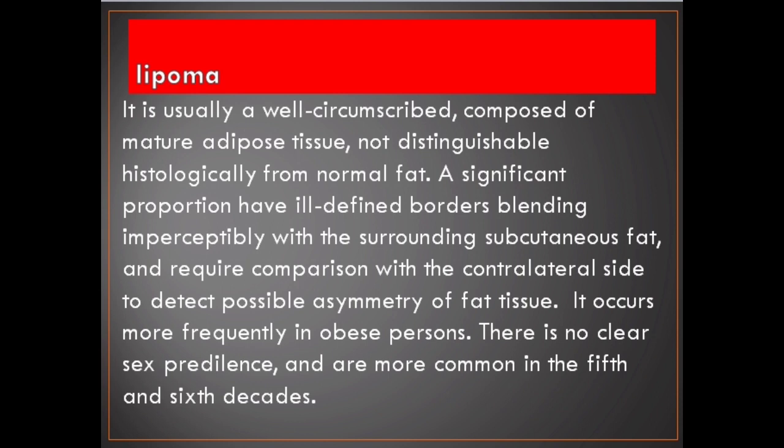It is usually well-circumscribed, composed of mature adipose tissue, not distinguishable histologically from normal fat. A significant proportion have ill-defined borders blending imperceptibly with the surrounding subcutaneous fat, and require comparison with the contralateral side to detect possible asymmetry of fat tissue. It occurs more frequently in obese persons. There is no clear sex predilection and they are more common in the fifth and sixth decades.